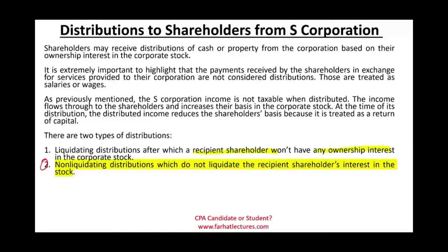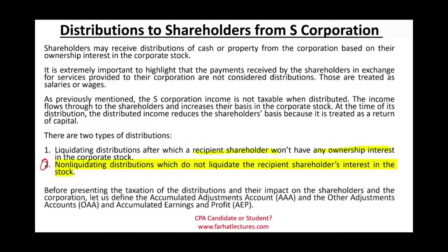In order to understand distribution to shareholders from an S-Corporation, we need to understand a few terms. The first is the Accumulated Adjustment Account, or AAA. Another is the Other Adjustment Account, OAA. And there is Accumulated Earnings and Profit, AEP — you should be familiar with AEP from the C-Corporation.